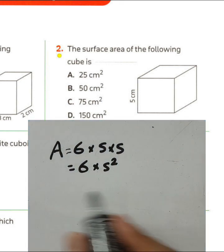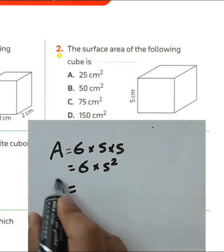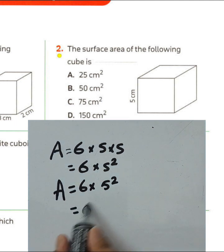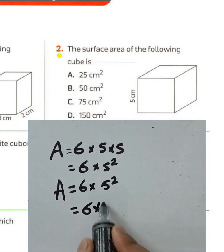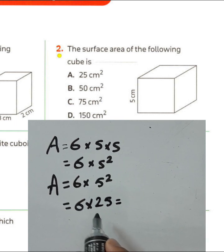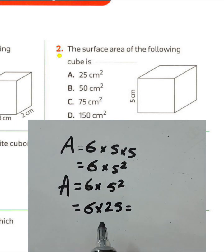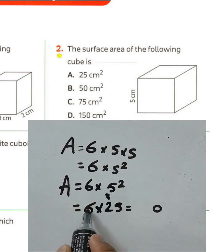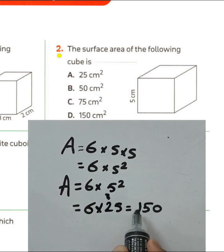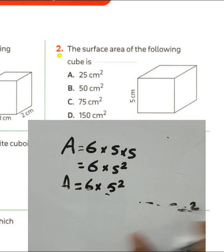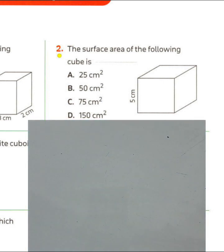The side is given as 5, so the surface area equals 6 times 5 squared, which is 6 times 25. Five times 6 equals 30, carry 3; 2 times 6 equals 12, plus 3 equals 15. The result is 150 square centimeters. Choose letter D.